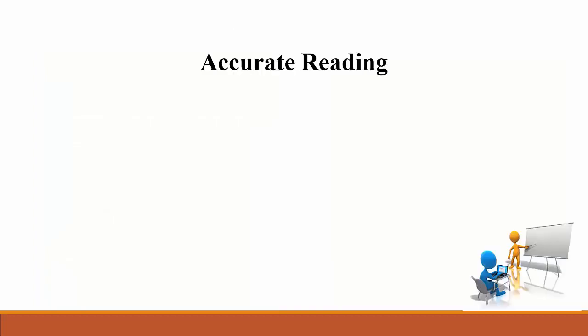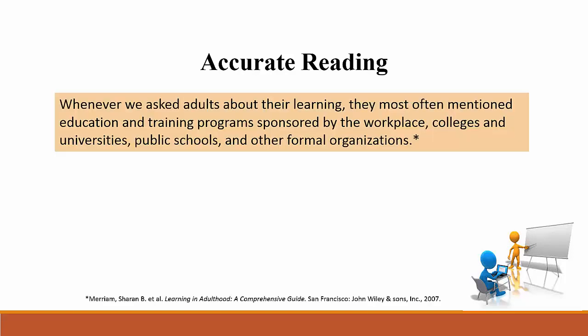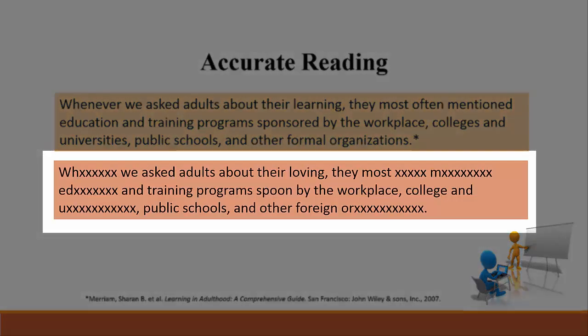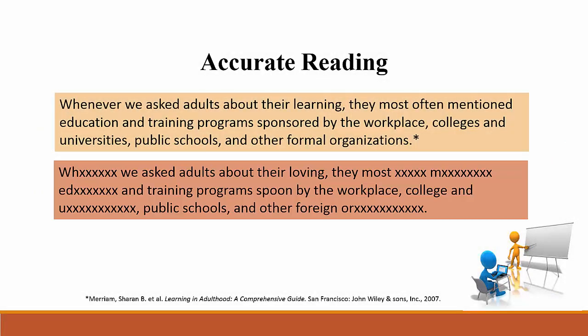Now let's talk about accurate reading. Accurate reading means recognizing the words on the page with a minimal number of errors. Here is a sentence taken from a book on adult learning. Imagine only being able to recognize a small portion of the words — the X's here indicate where a reader just gives up and can't even imagine what that word might be. But some words are read incorrectly as well. It would be impossible to discern what the sentence is about if we were reading it like this, and we would undoubtedly be frustrated. To state the obvious, we're more likely to make sense of the text if we can at least recognize all the words correctly. Fluent readers identify the words they encounter in connected text with a high degree of accuracy.